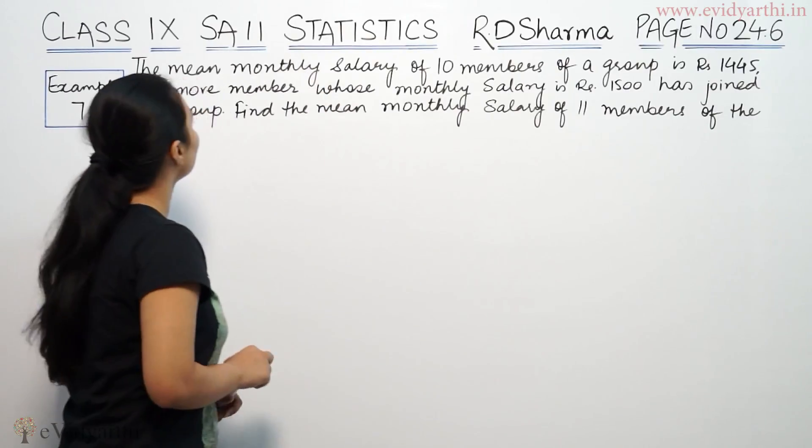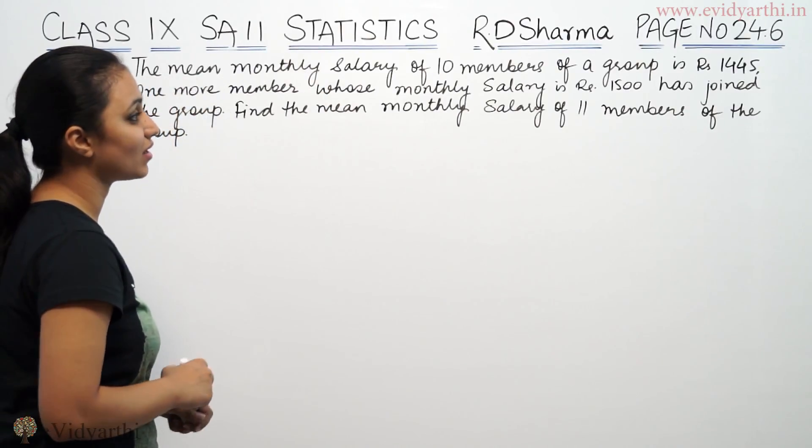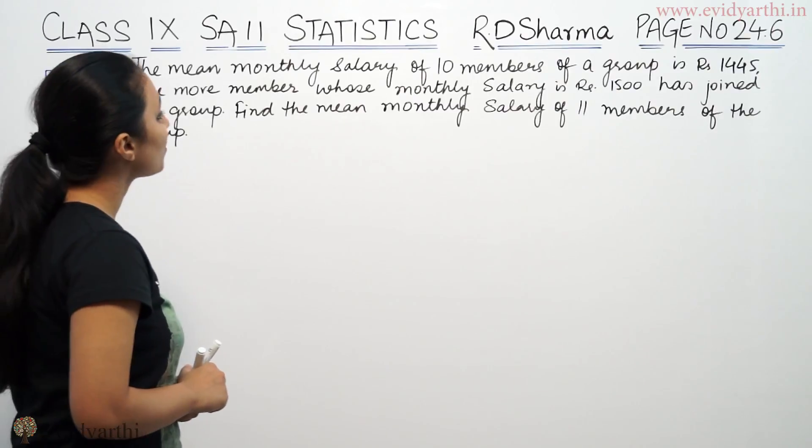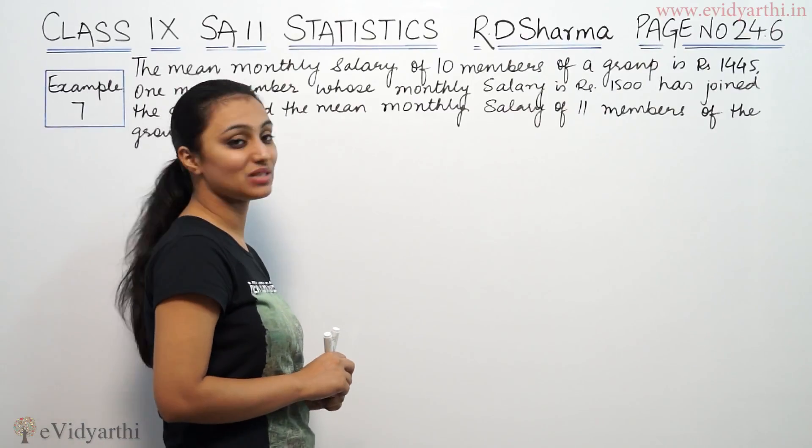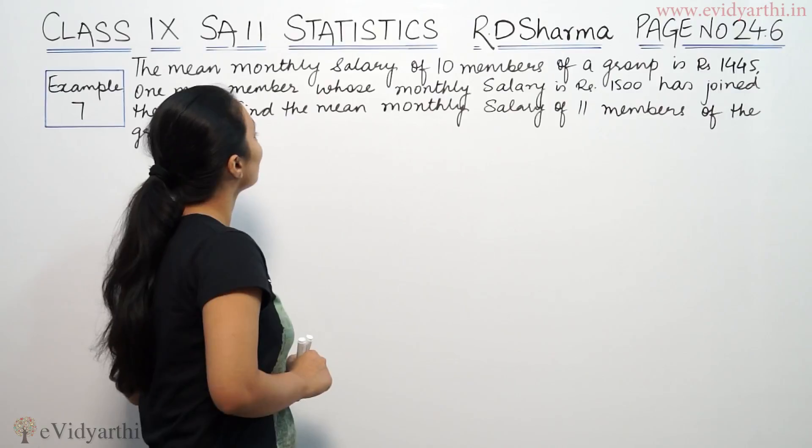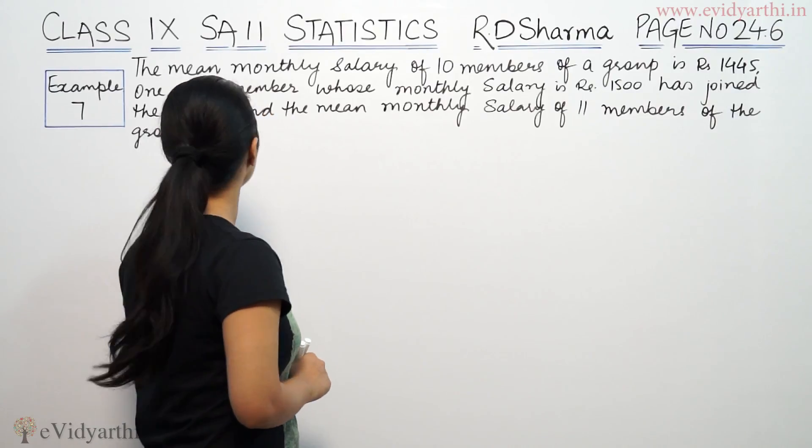It says, the mean monthly salary of 10 members of a group is 1445. One more member whose monthly salary is 1500 has joined the group. Find the mean monthly salary of 11 members of the group.